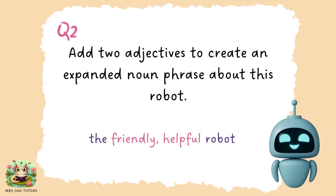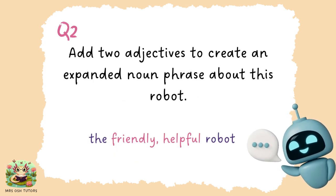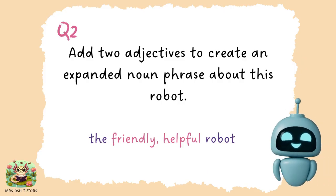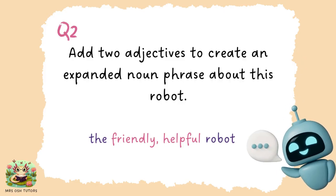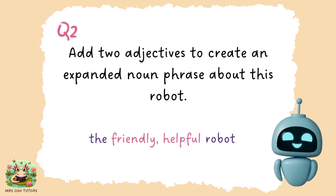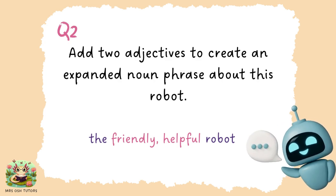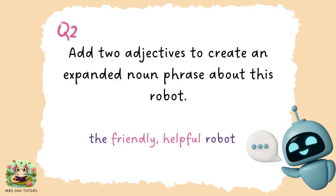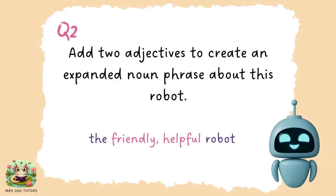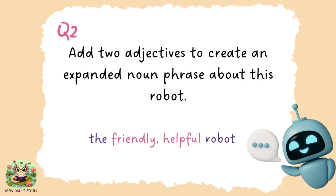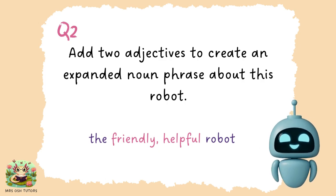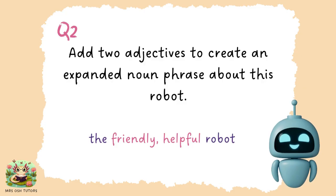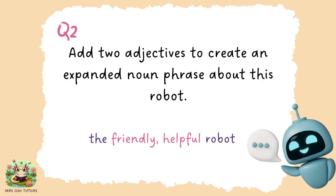Question two: this is just a suggestion — you might have thought of all kinds of other adjectives. But remember, an adjective describes the noun, and the noun is the robot. So I thought 'the friendly, helpful robot', because they might be quite a helpful robot. But you might have had 'cute', 'blue', 'green', 'turquoise', 'wavy' — all kinds of things. Two adjectives to describe the robot. Notice that when we have two adjectives together, we need a comma in between.